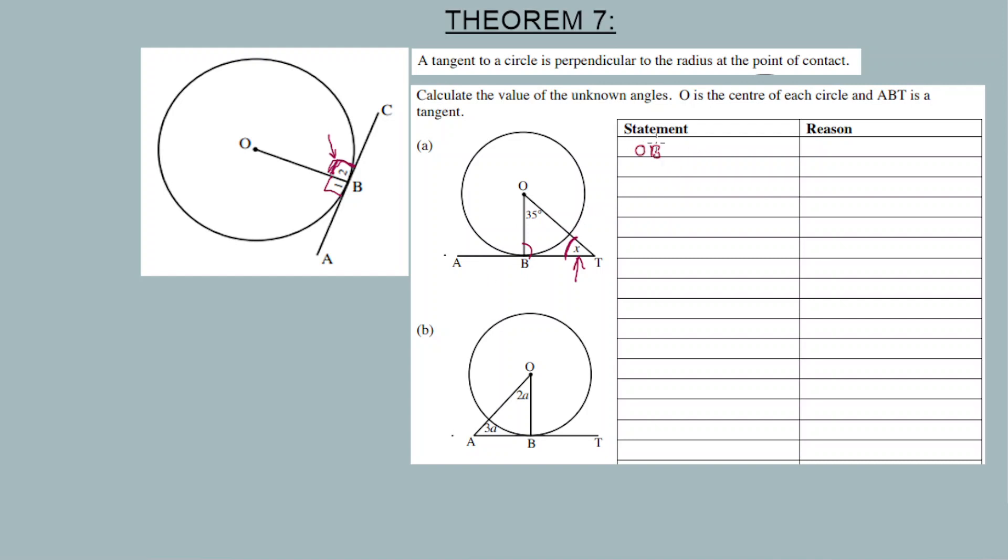Calculate the values of the unknown angles. O is the center of each circle and APT is a tangent. Let's calculate x. This angle OBT is equal to 90 degrees. Why? Because a tangent is perpendicular to a radius. This is how we use theorem number 7.